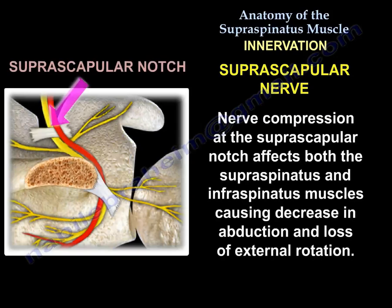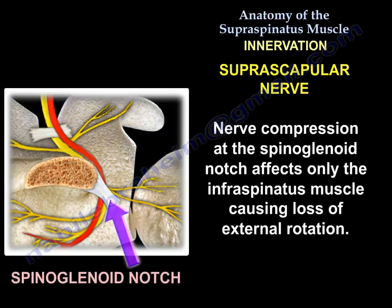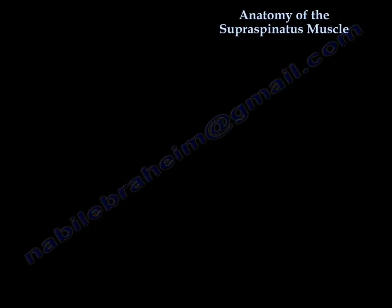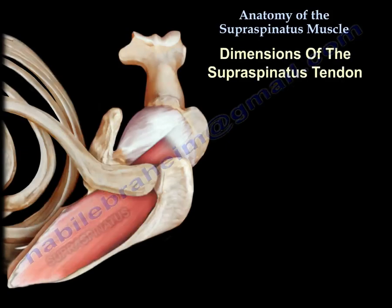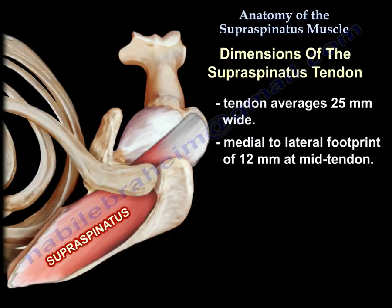Entrapment of the nerve at the suprascapular notch can cause denervation of both the supraspinatus and the infraspinatus. Regarding tendon dimensions, the supraspinatus averages 25 mm wide and has a medial to lateral footprint of 12 mm at mid tendon.